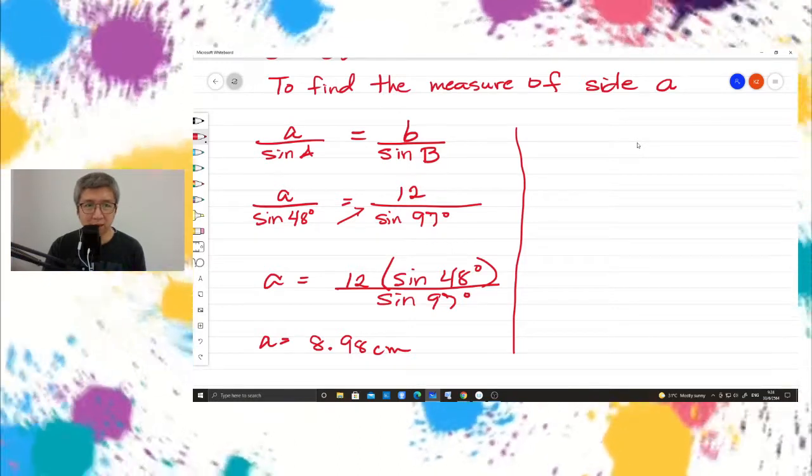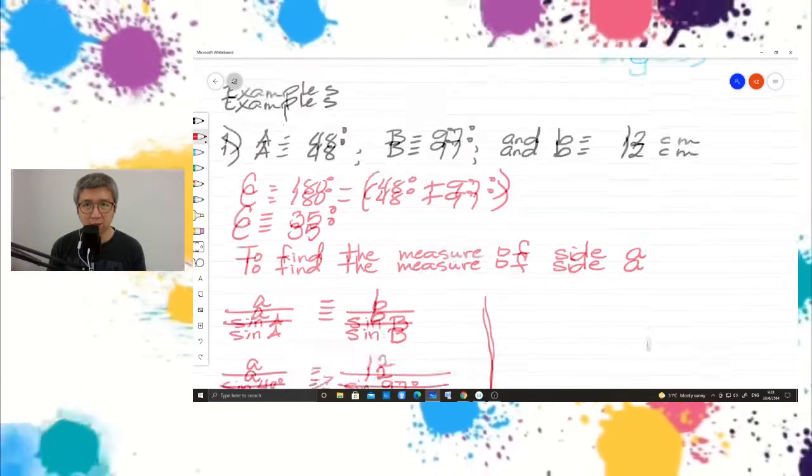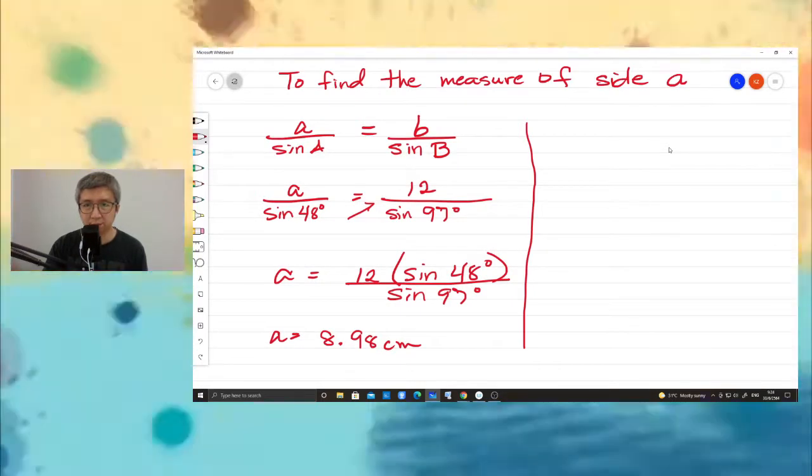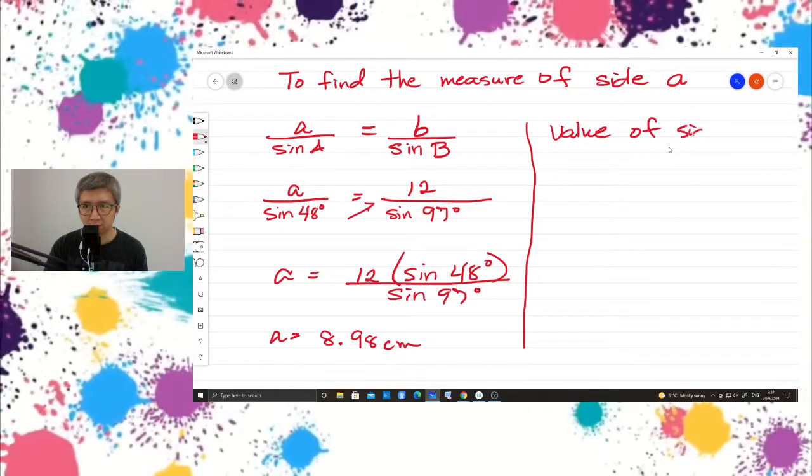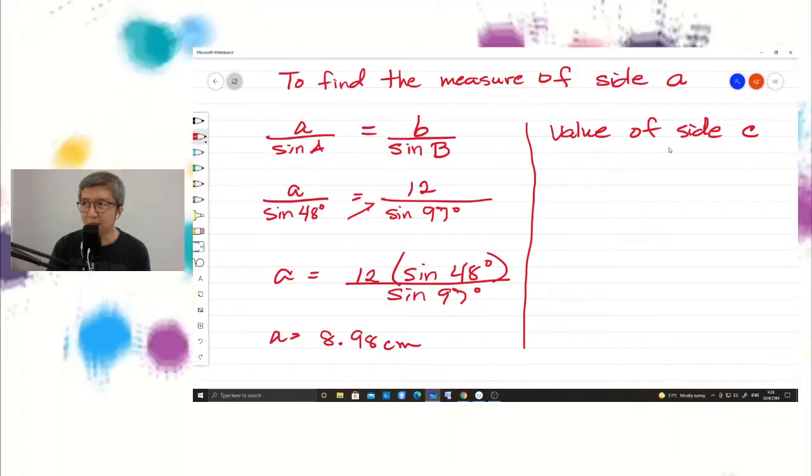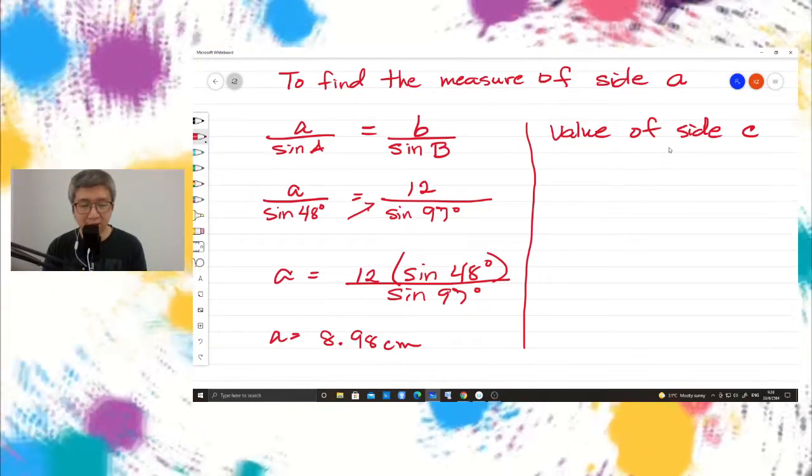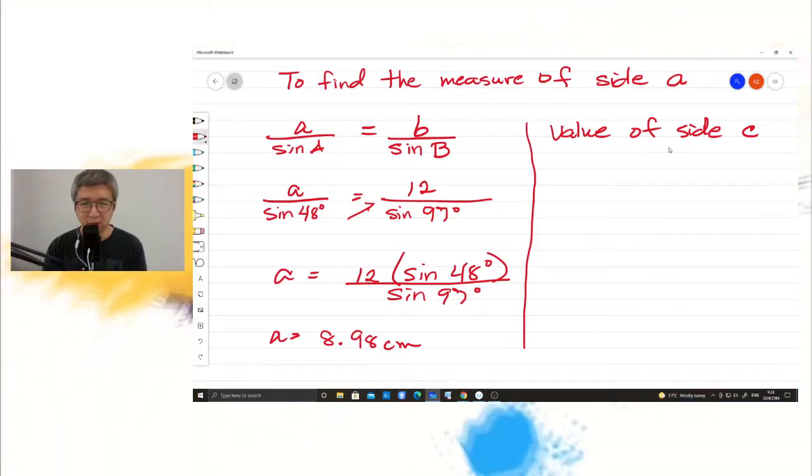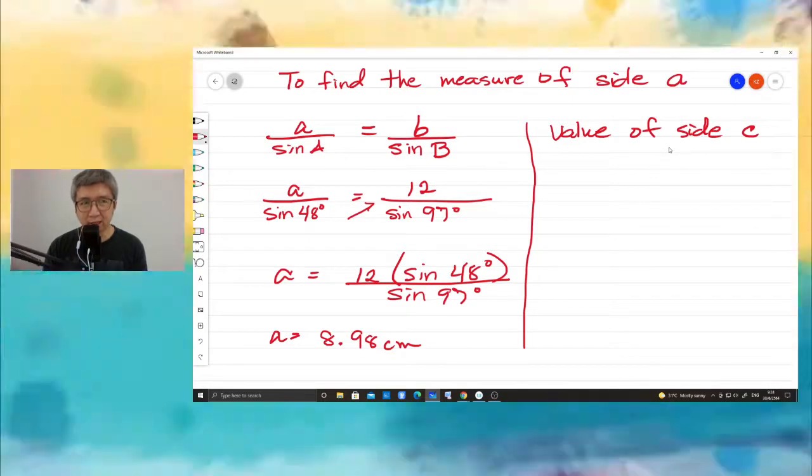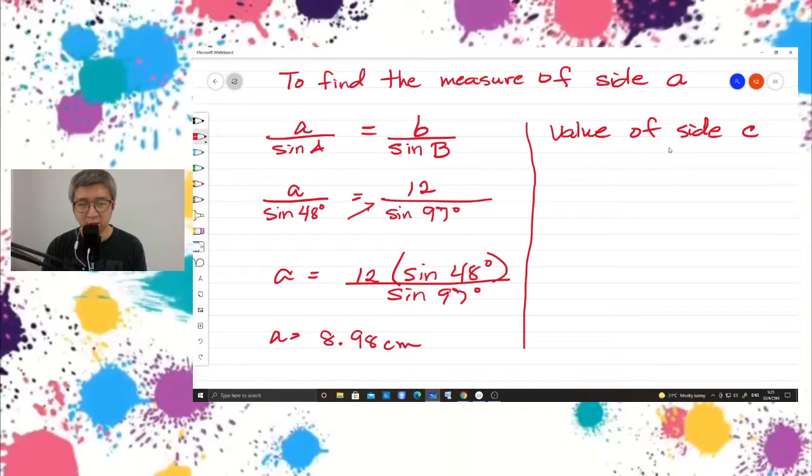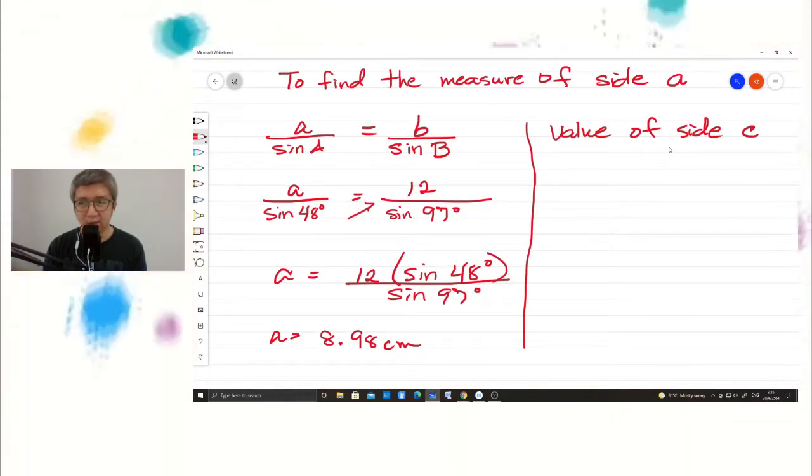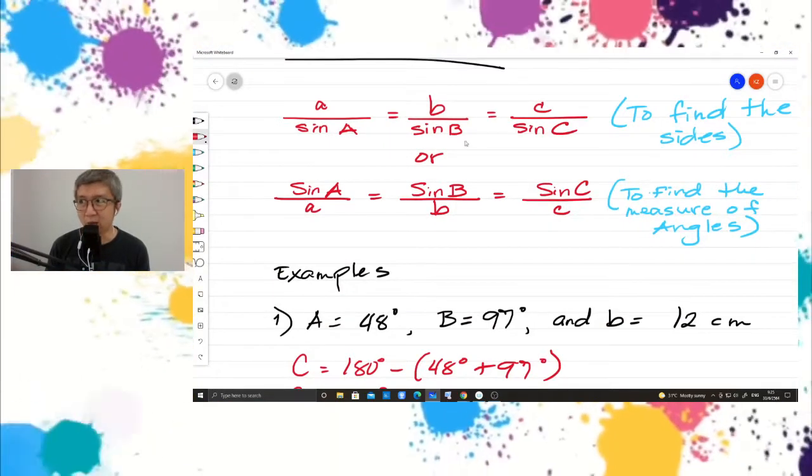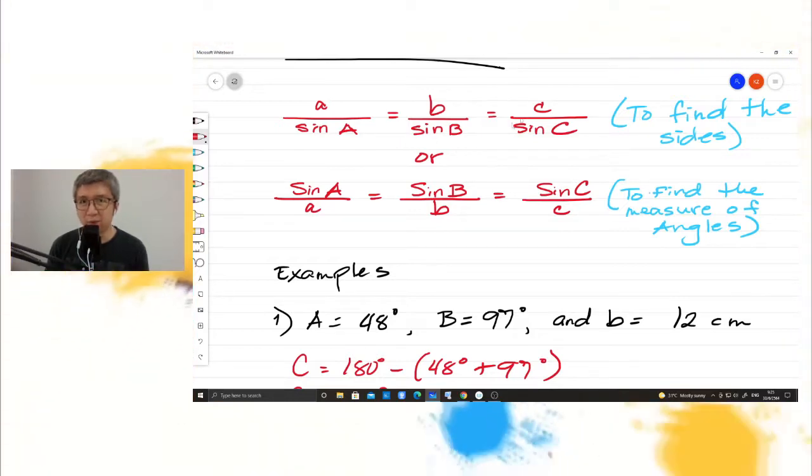Next to find the value of side C. In here, we cannot use Pythagoras theorem, because Pythagoras theorem is only for right triangles. So first, you have to check if the triangle is right or not right triangles. For this one, you can use either B or A, any of this you can use because from the formula, it says that these three are equal. So it means you can use either side A or side B to find side C.